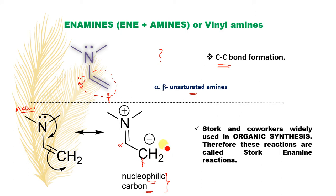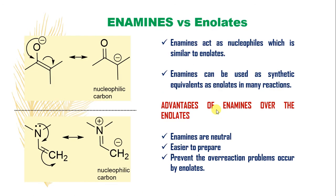Using these enamines, Stork and co-workers widely utilized them in organic synthesis to form C-C bonds. Therefore, these reactions are called Stork enamine reactions. Enamines act as nucleophiles, similar to enolates, and can be used as synthetic equivalents of enolates in many reactions. The basics of enolates were discussed in the previous video.